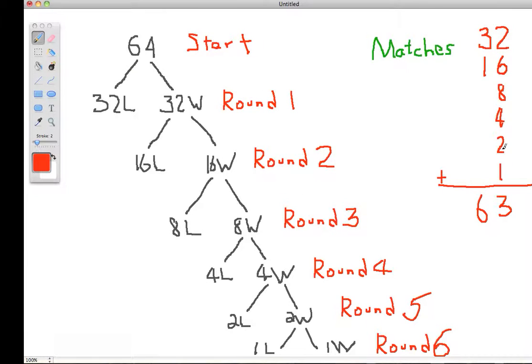So here I have a diagram that shows the players playing the matches and will allow us to count up and answer the questions in the problem. To begin with, right here at the start, we have 64 players. Now the first round, half of these players play the other half and half of them win their rounds and half of them lose their rounds.